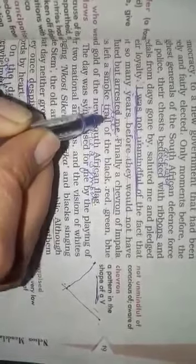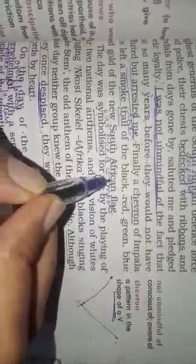Trail means a line. So there were different jets leaving smoke lines of different colors because they were representing the flag of South Africa, the new flag of South Africa.